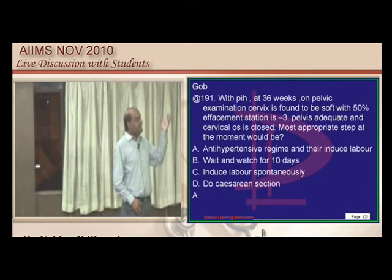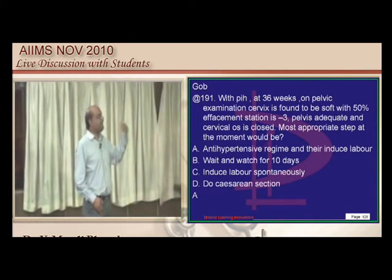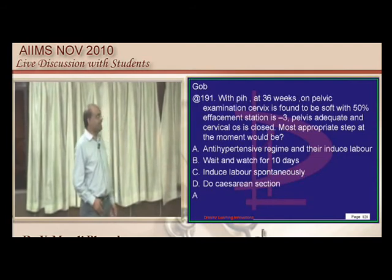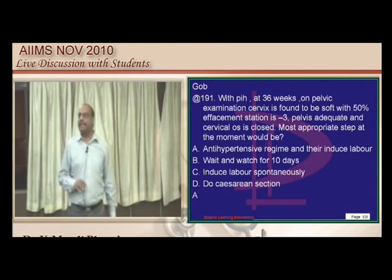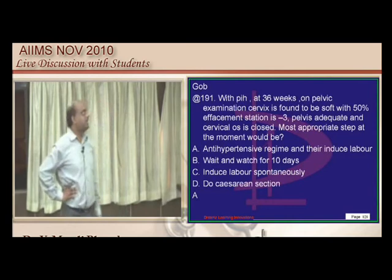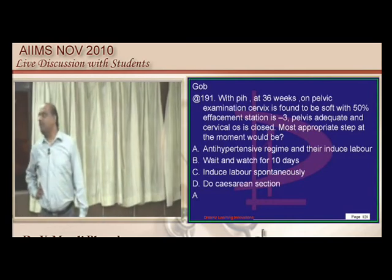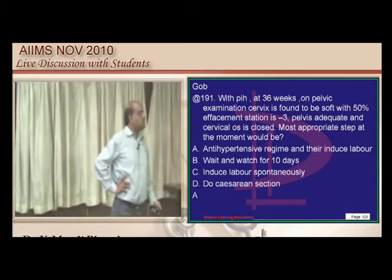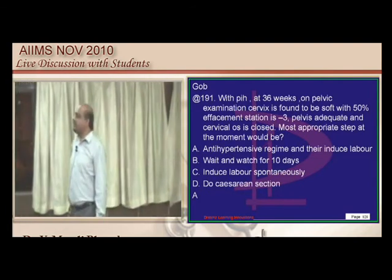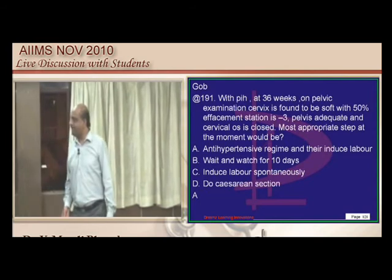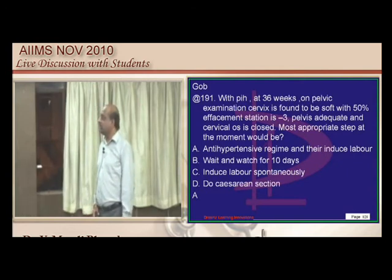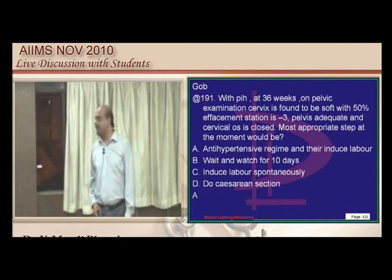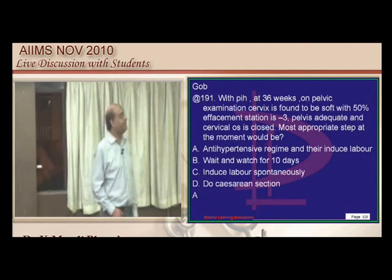PIH at 36 weeks with soft cervix, 50% effacement, adequate pelvis, and closed cervical os with BP 150/100: at 36 weeks we can still manage conservatively. However, at 37 weeks with all these risk factors, there is no reason to wait — early delivery is favored.